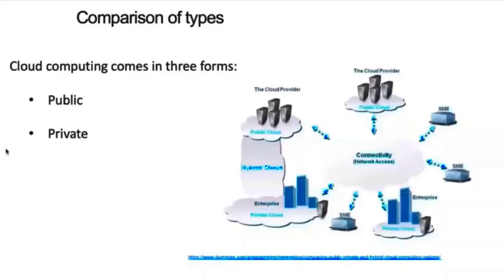The third option is a hybrid cloud, where you get the best of both worlds. You can control your private infrastructure for sensitive assets, and it's cost-effective because it's cheaper to grow on the public side than the private side — private resources are dedicated to you and therefore more expensive. With a hybrid cloud, if a portion of your business is growing, you can let it grow on the public cloud side, which is cheaper than expanding the private infrastructure.